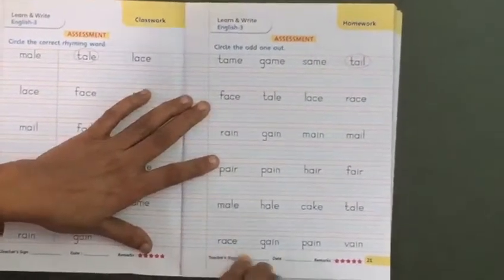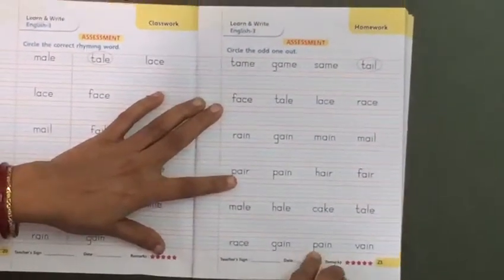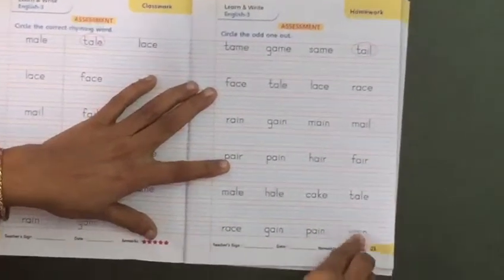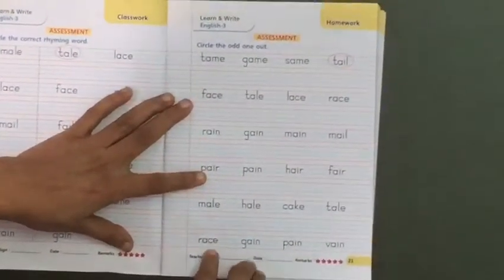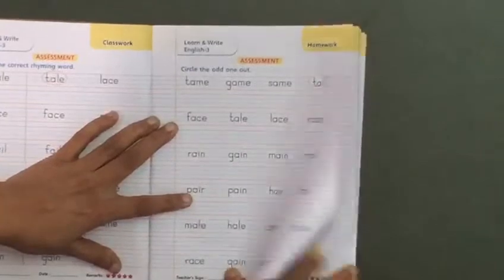R-A-C-E race, G-A-I-N gain, P-A-I-N pain, V-A-I-N vain. Race is the odd one out.